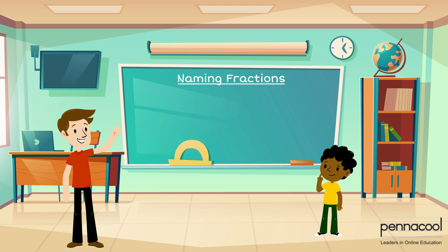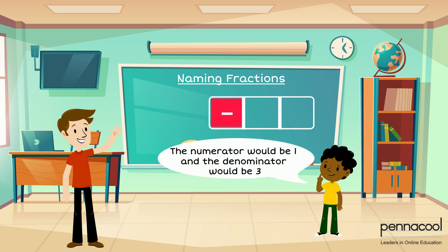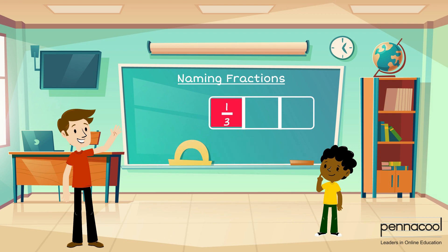Sir then cuts a rectangular block into three equal pieces. He shades one piece out of the three. Gabriel identifies the numerator as one and the denominator as three. Sir again shows him that we put the numerator first and the denominator second. The fraction one part out of three is one third. If two parts were shaded out of the three, this fraction would be two thirds.